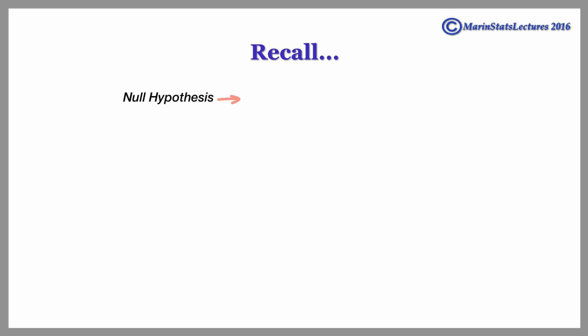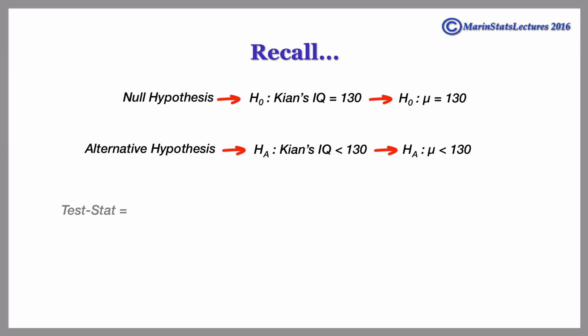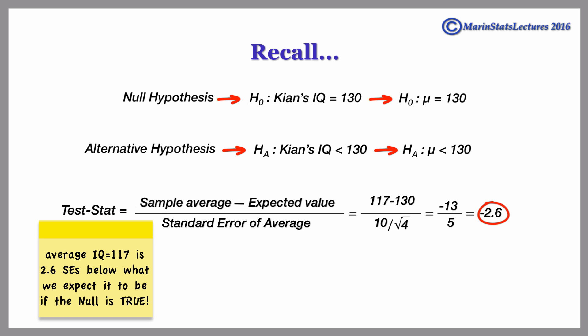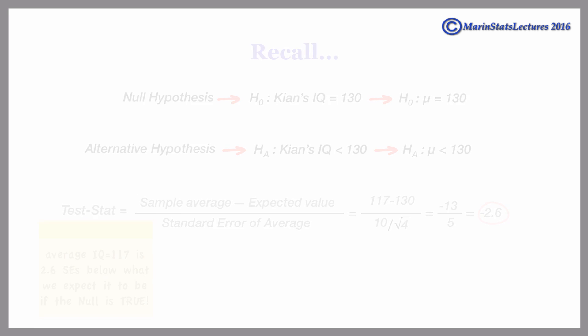Recall that we are using the following null and alternative hypothesis. We had calculated our test statistic to be negative 2.6, and this allows us to say that the sample average IQ of 117 is 2.6 standard errors below what we'd expect it to be — an average of 130 — if the null really is true.